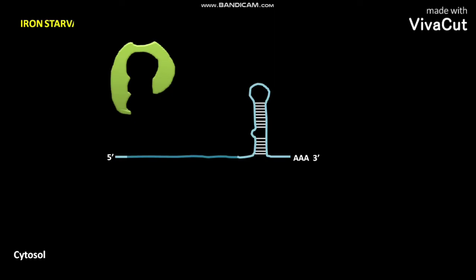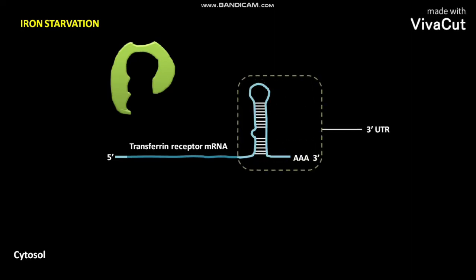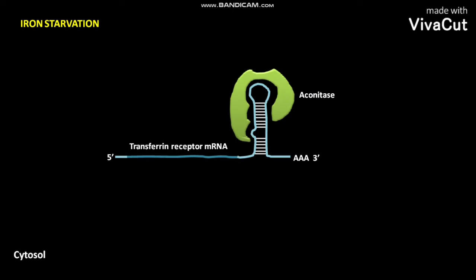During iron starvation, now let us consider what happens to transferrin receptor mRNA having a 3' UTR. In this condition, the cytosolic aconitase binds to the 3' UTR region of transferrin receptor mRNA.